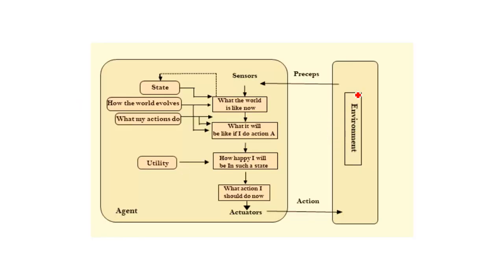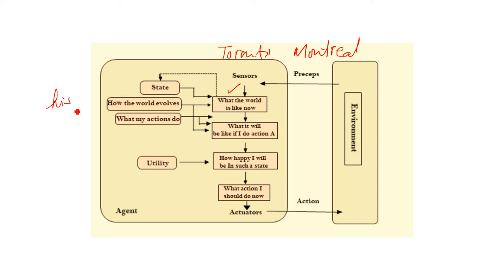Here I will explain using a diagram. This is our environment — we perceive that we need to go to Montreal and consider what the world is like now. The current situation is going from Toronto to Montreal, but we do not take immediate action here. Immediate action is only for simple reflex agents using if-else conditions. We also consider how the world evolves — meaning our history, knowledge, and past experience of how we previously traveled from Toronto to Montreal.